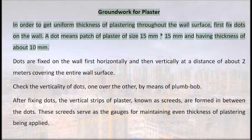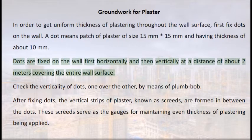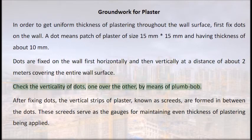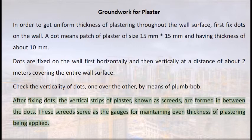Plaster groundwork: to get uniform thickness throughout, first fix dots on the wall. A dot is a patch of plaster of size 15 mm × 15 mm and about 10 mm thickness. Dots are fixed first horizontally then vertically at about 2 m intervals, covering the entire wall surface. Check the verticality of dots using a plumb bob. After fixing dots, vertical strips of plaster known as screeds are formed between the dots, serving as gauges for maintaining even thickness.